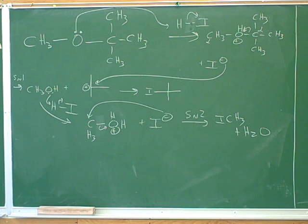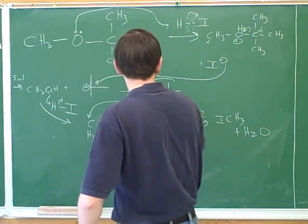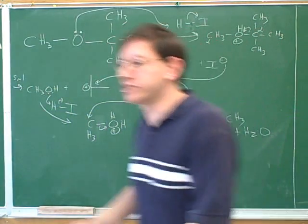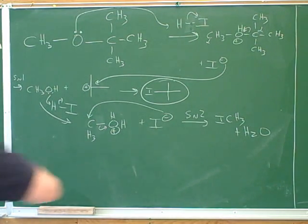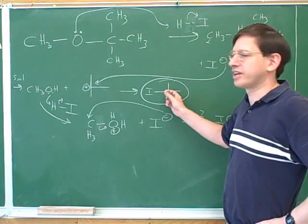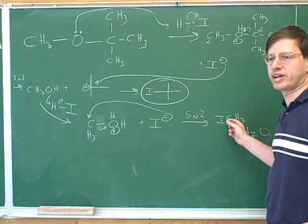The haloalkane and water. There's one other product. What was the other product from the SN1 reaction? The one I was just pointing to is the other product, so that's the other one we wanted to circle. This is what we got out of the tertiary carbon, and here's what we got out of the primary carbon.